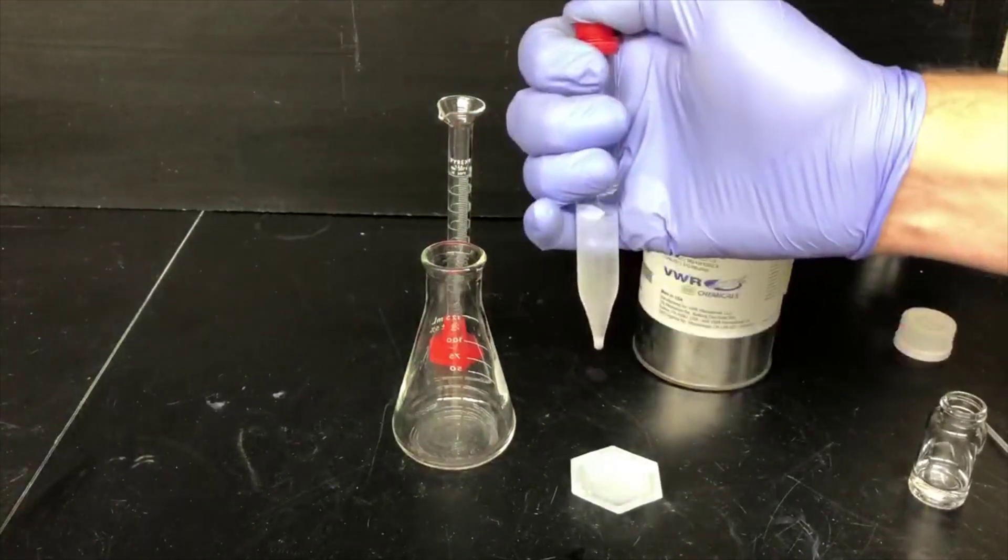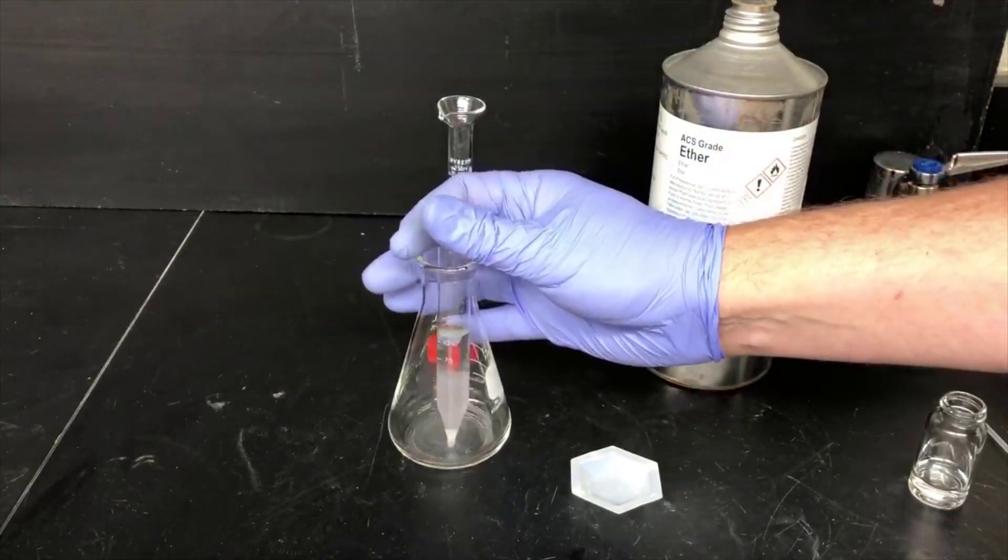We now have two layers, a salty water layer and an organic layer that contains mostly ether but also cyclohexanone.